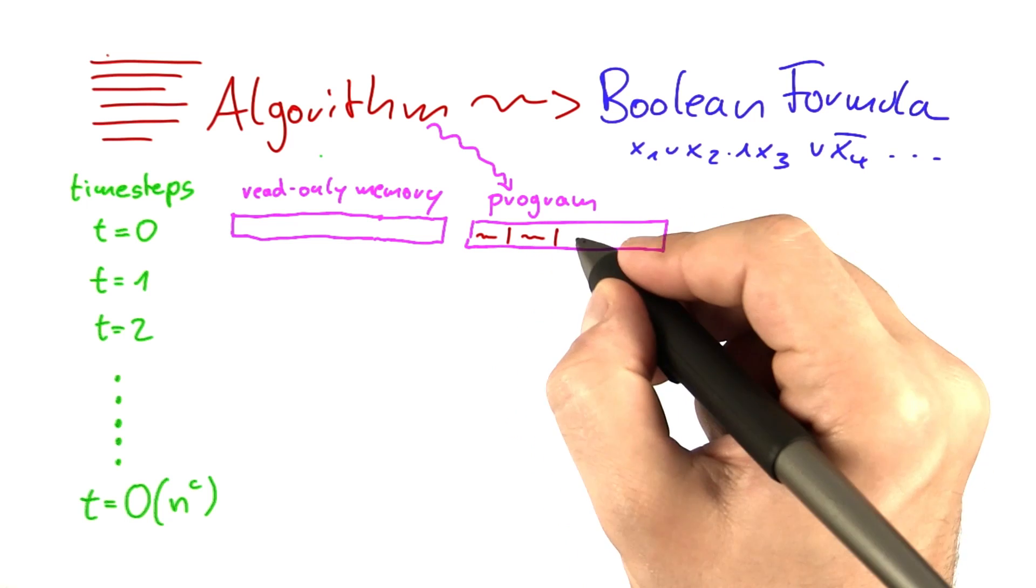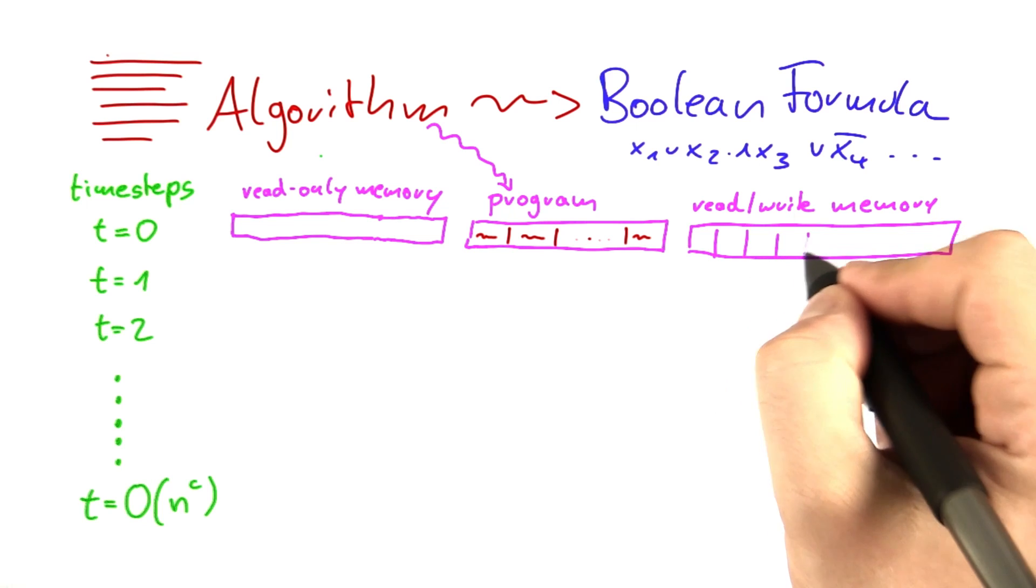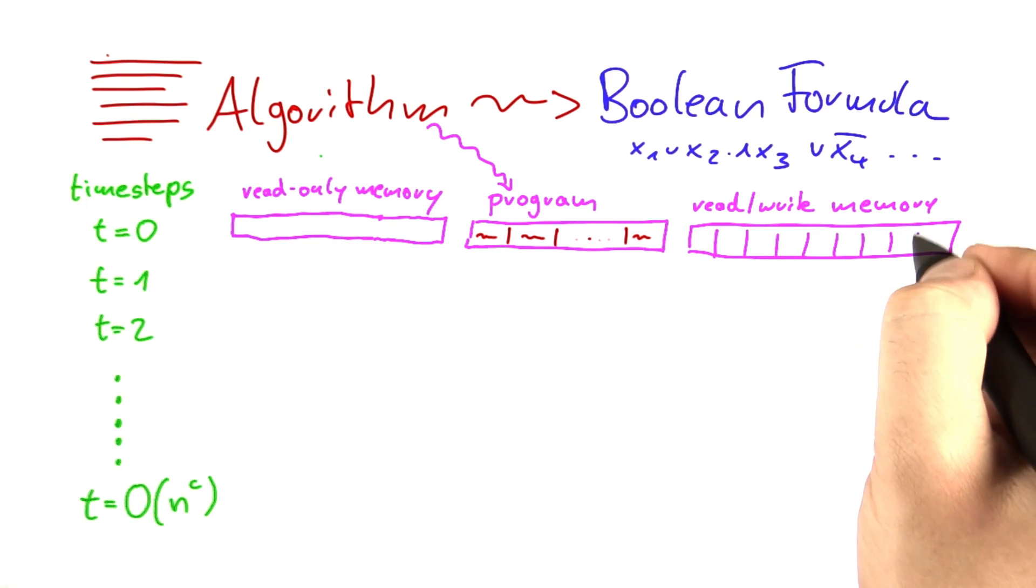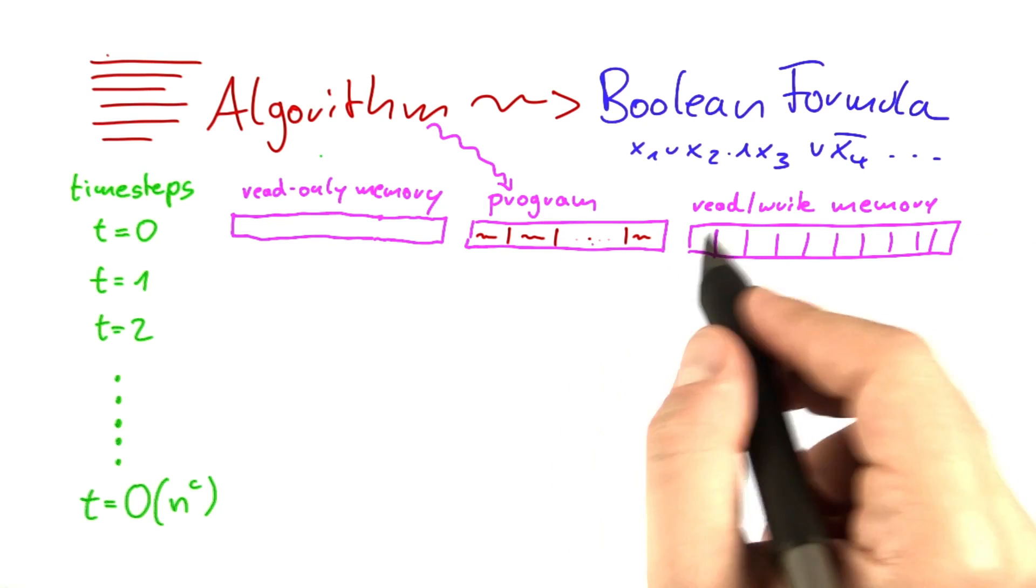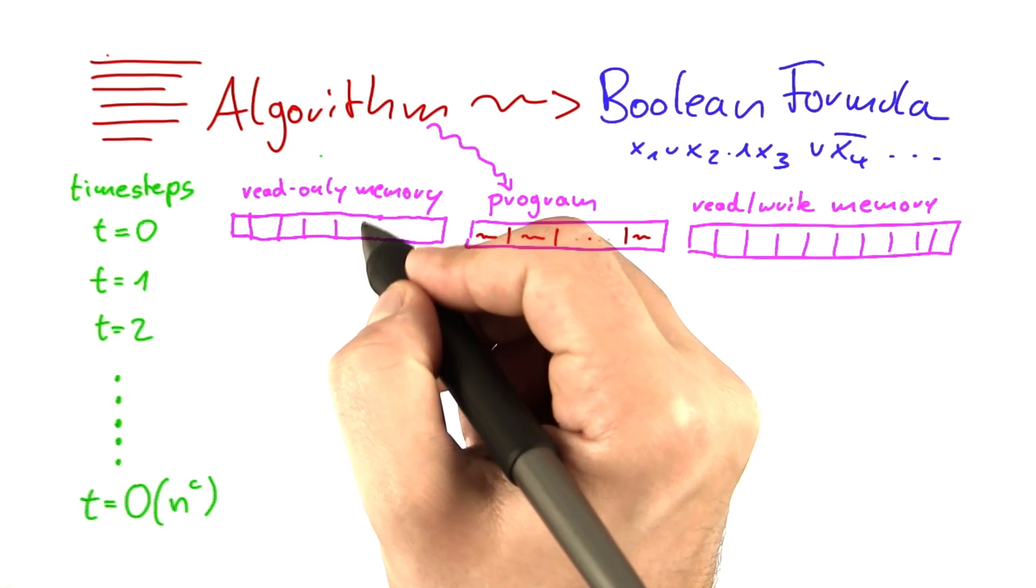So this here would be the first line of code. Then this would be the second line of code and so on. And finally, the RAM had a reading and writing memory. So we had some memory cells here holding the variables. And those variables, of course, are changed by the program depending on what's here in the input.